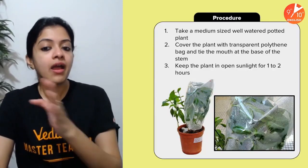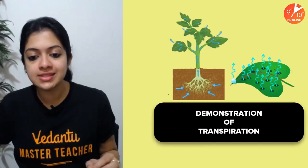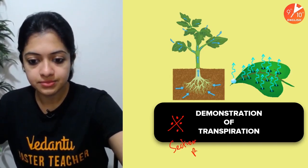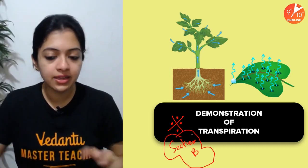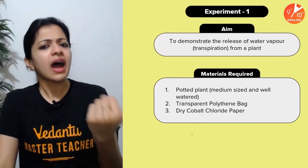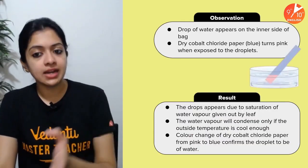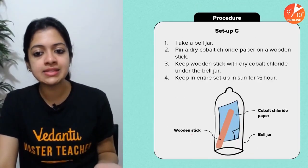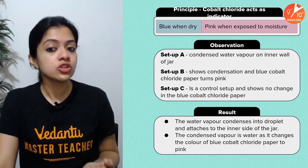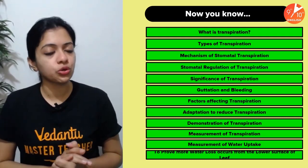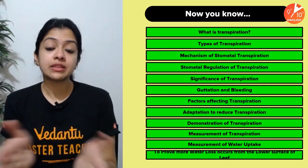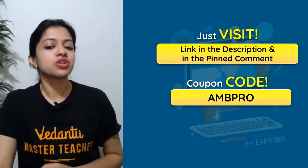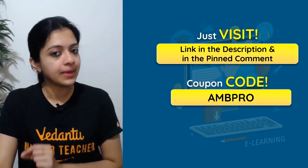The demonstration of transpiration experiments is part of your syllabus and very important for Section B. You must have a good understanding of how to demonstrate that transpiration occurs, that water is what is released, and all related experiments — including bell jar experiments, cobalt chloride paper, and the Ganong potometer experiment. Go through the notes provided for full details.